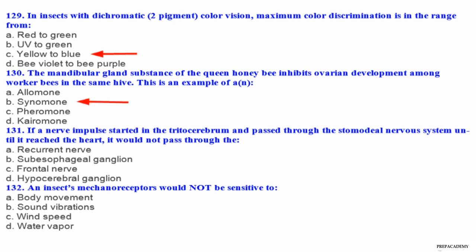Question 131. If a nerve impulse started in the tritocerebrum and passed through the stomatogastric nervous system until it reached the heart, it would not pass through the: A recurrent nerve, B subesophageal ganglion, C frontal nerve, D hypocerebral ganglion. Question 132. An insect's mechanoreceptors would not be sensitive to: A body movement, B sound vibrations, C wind speed, D water vapor.